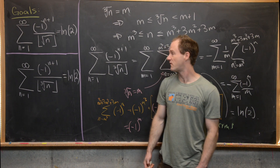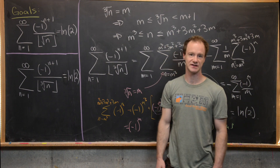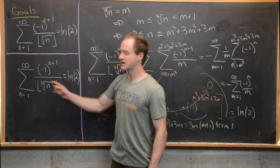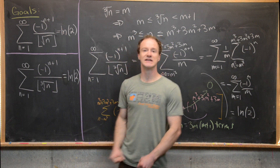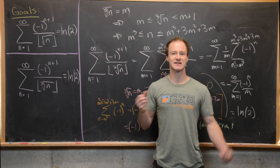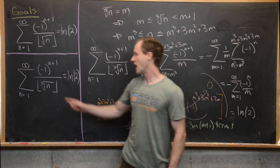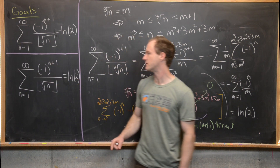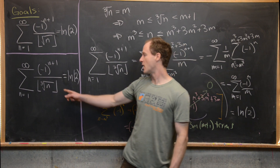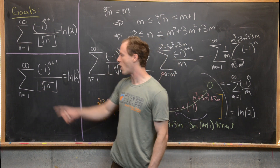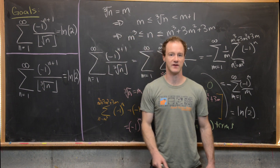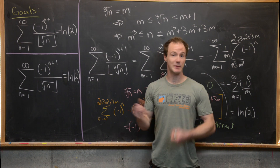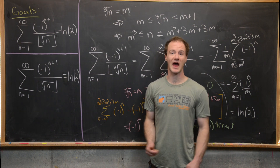As a follow-up question: do we expect the same result for all such sums? If we fix some r and look at the alternating sum n equals 1 to infinity of minus 1 to the n plus 1 over the floor of the r-th root of n, do we also expect that to equal ln(2)? Play around with that and post what you find in the comments.